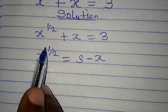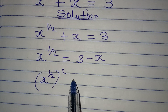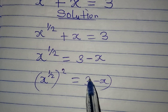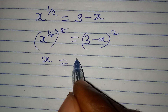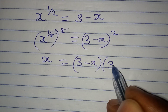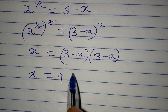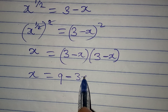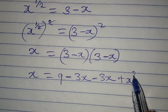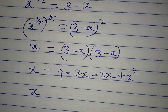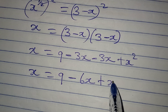Now we can remove this power of 1 over 2 by squaring both sides: x to the power of 1 over 2 squared equals 3 minus x squared. This and this will cancel so that x will be equal to 3 minus x multiplied by 3 minus x. x is equal to 3 times 3 is 9, 3 times minus x is minus 3x, minus x times 3 is minus 3x, and minus x times minus x is plus x squared.